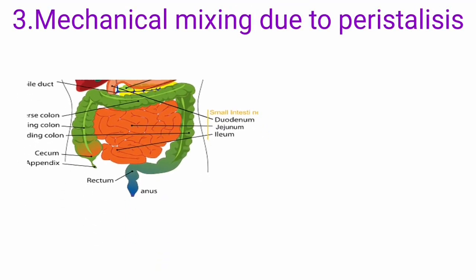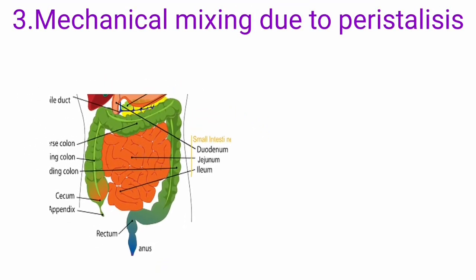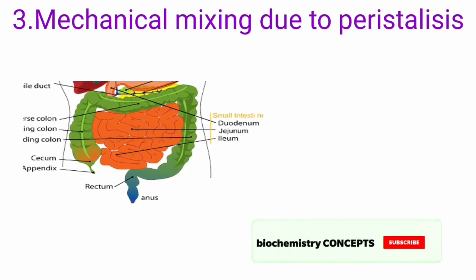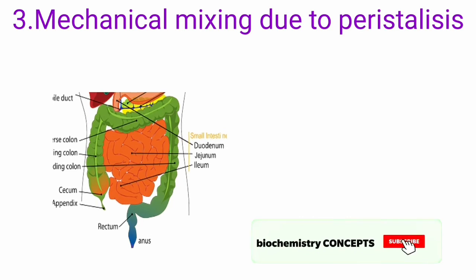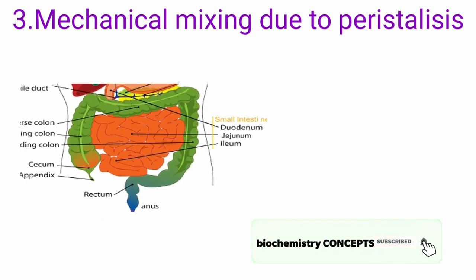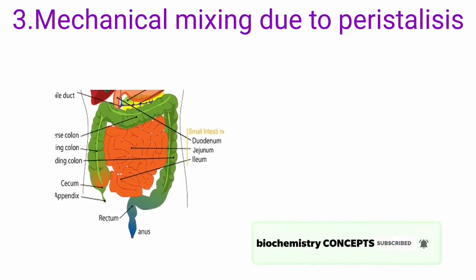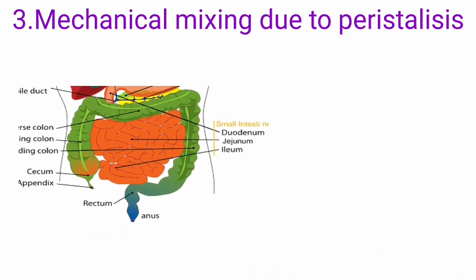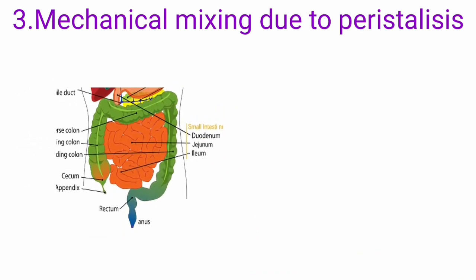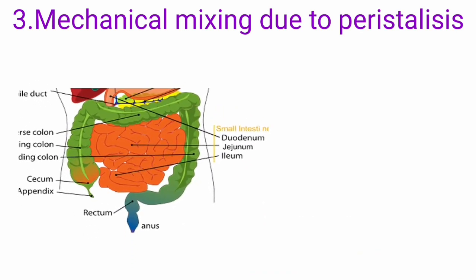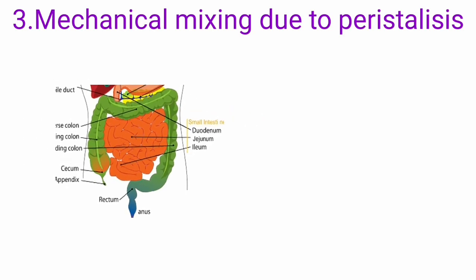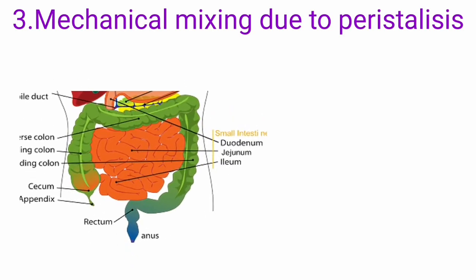The third mechanism is mechanical mixing due to peristalsis, which also helps in the emulsification of lipids. The smaller emulsified lipid droplets are good substrates for digestion.